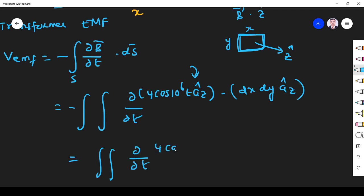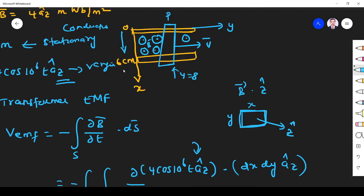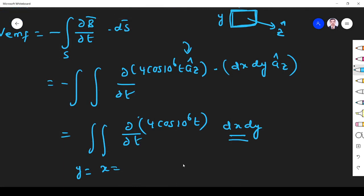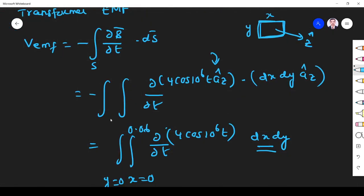The magnetic field is in z direction, coming out of the screen. So what is the surface? If the magnetic field is in z direction, the surface should be xy surface. Then only the normal will be z cap. The surface is xy plane, so the area element is dx dy az vector. Integration with respect to x and y: x varies from 0 to 6 centimeters, and the conductor is at y equals 8 centimeters, so y varies from 0 to 8 centimeters, that is 0.08.